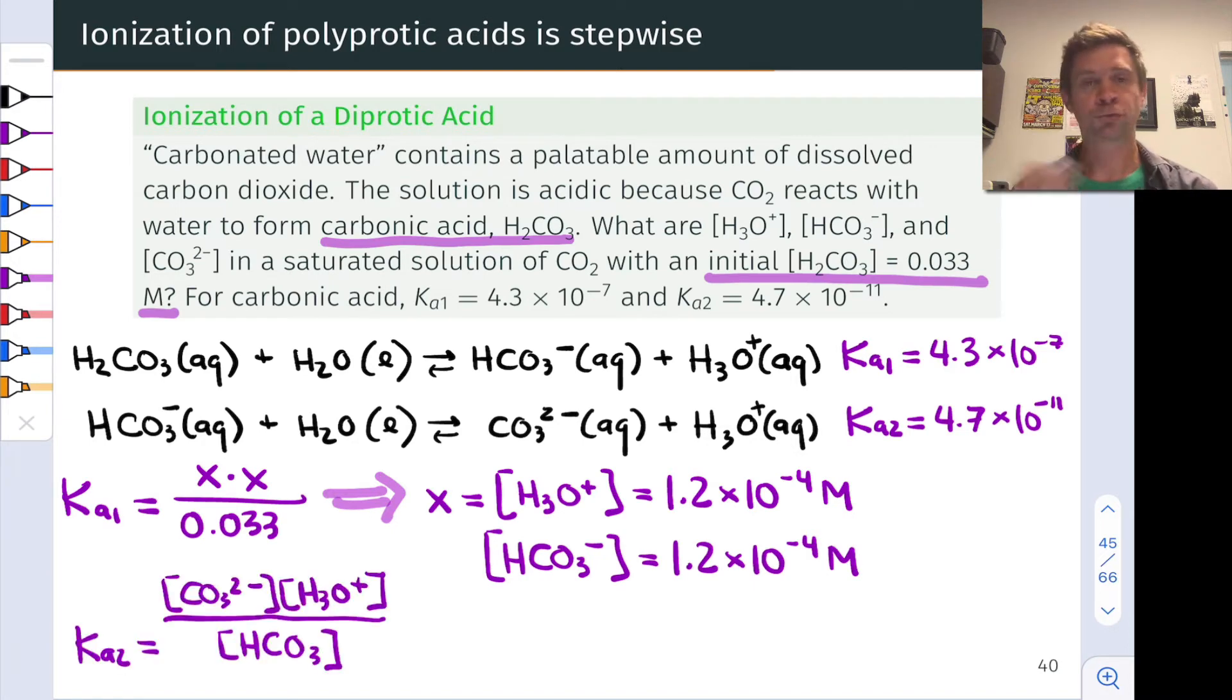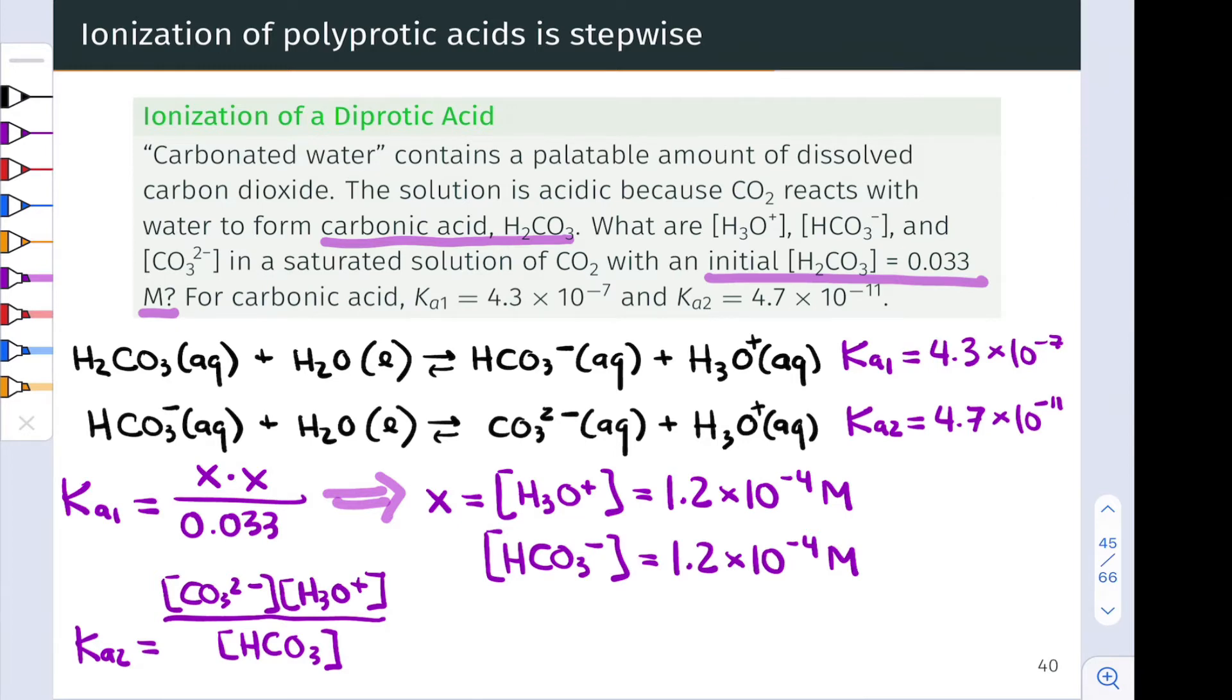And here we can write an equilibrium equation for this reaction. Ka2 is equal to carbonate concentration times hydronium concentration divided by the bicarbonate concentration. And actually, we already know three of the four variables in this equation. We know Ka2, that was given. We know the hydronium concentration, and we know the bicarbonate concentration.